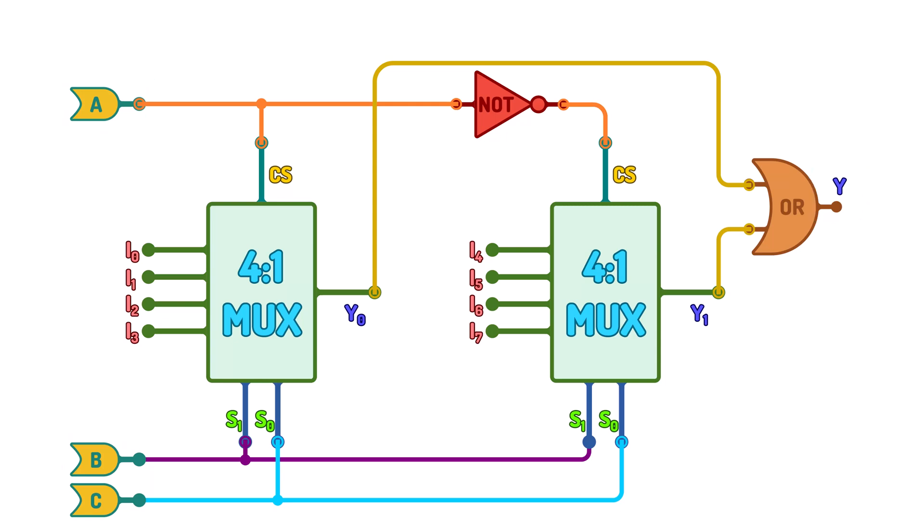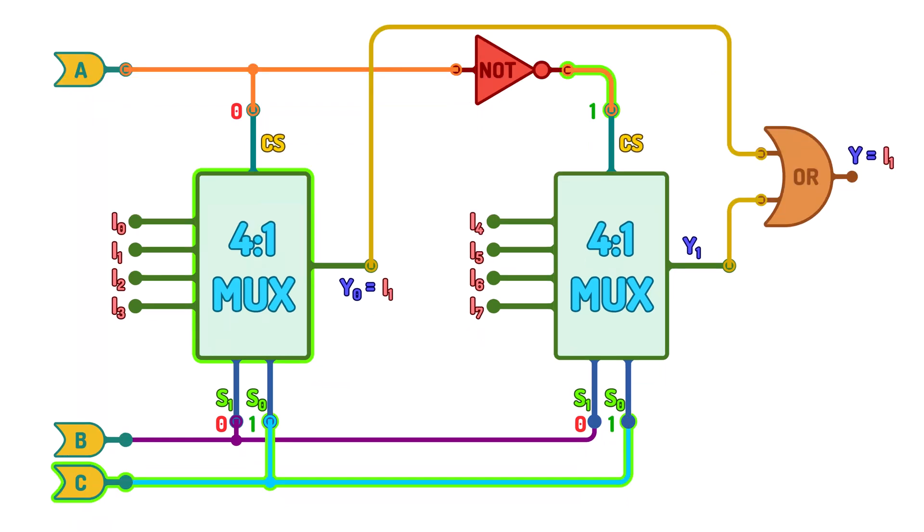When A, B, and C are 0, input I0 is selected. We can see that the setup is working as an 8-to-1 multiplexer for different selector lines.